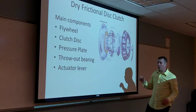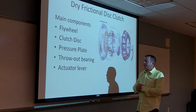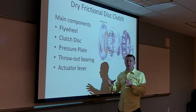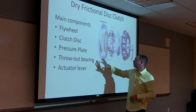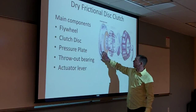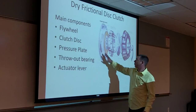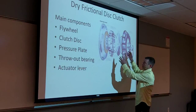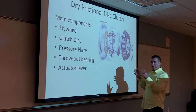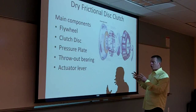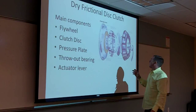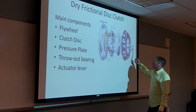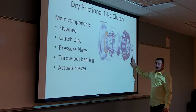The way this whole process works is the engine has mechanical energy which is transferred and stored in the flywheel, which is attached to the pressure plate. That stored energy — that inertial load — is broken or actuated through the actuator lever.